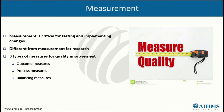Outcome measures ask: where are we ultimately trying to go, and are your changes actually leading to improvement? Process measures ask: are we doing the right things to effect an outcome? You have to improve your process — these are the parts of the system performing as planned. Balancing measures ask: if a change is designed to improve one part of the system, is it causing new problems in other parts of the system?